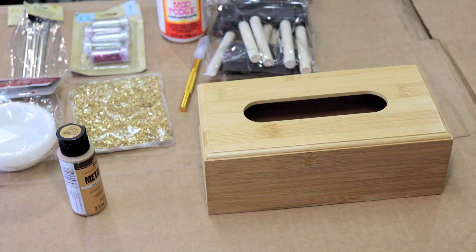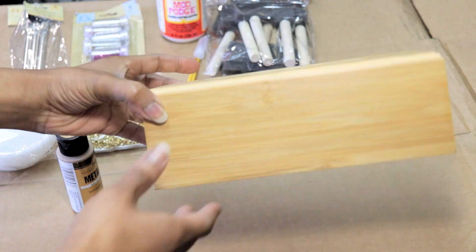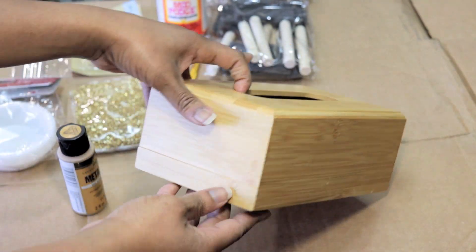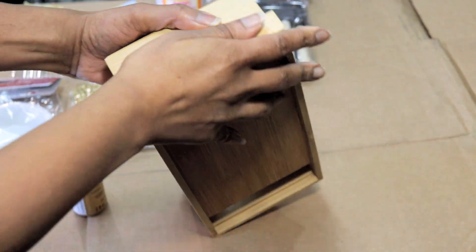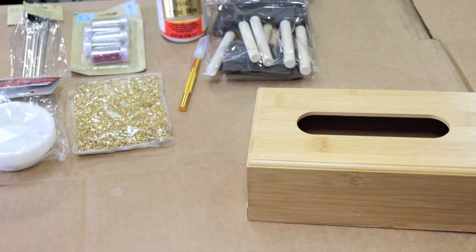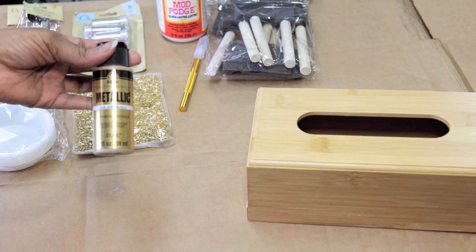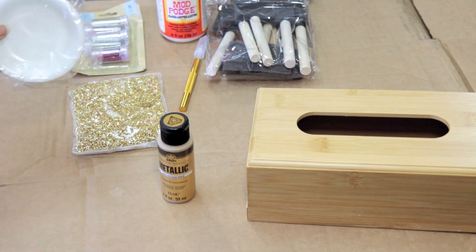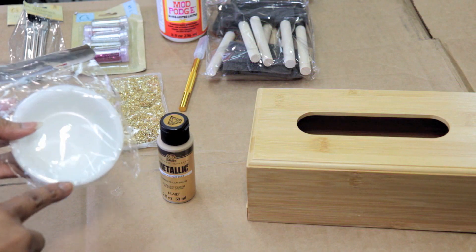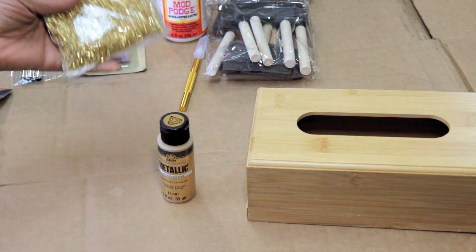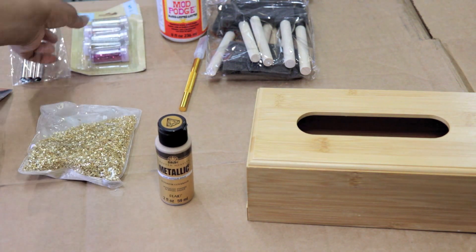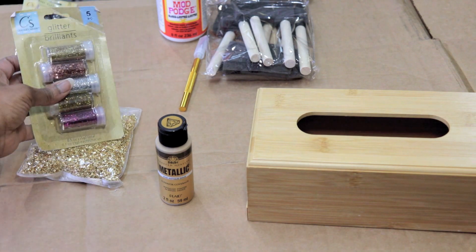Alright guys, now it's time to decorate this tissue box. What you'll need is the metallic gold, plastic cups, crushed glass, and some glitter.